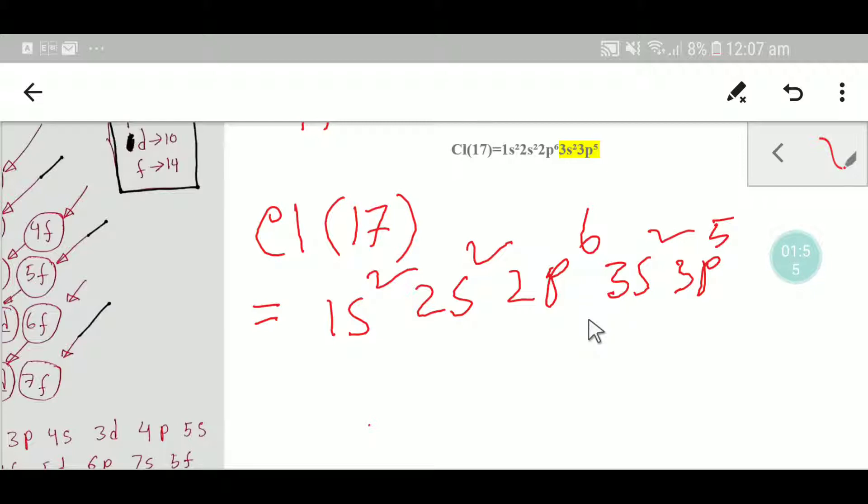In the third step, we will find out the valence shell. To find out the valence shell, we will look for the maximum value of n, that is the principal quantum number. Here the principal quantum number is 1, 2, 3. We have to consider the maximum value of principal quantum number, so we have here 3.